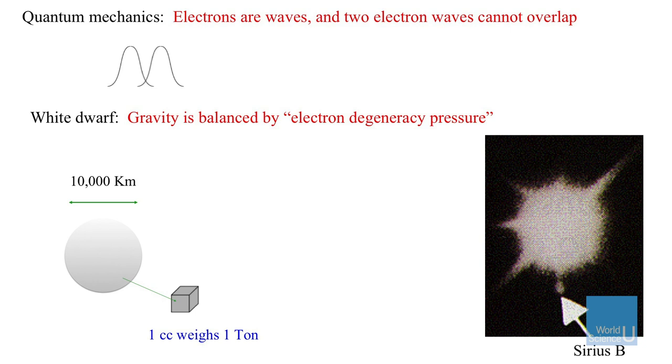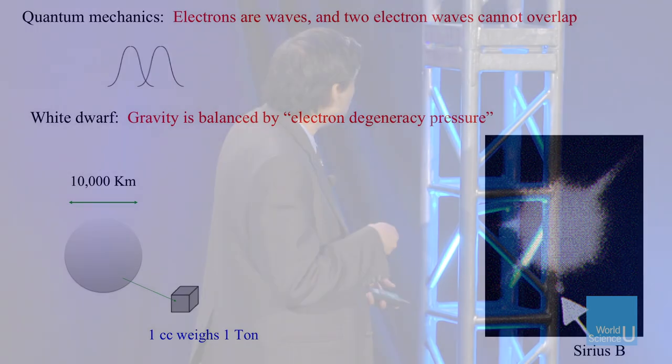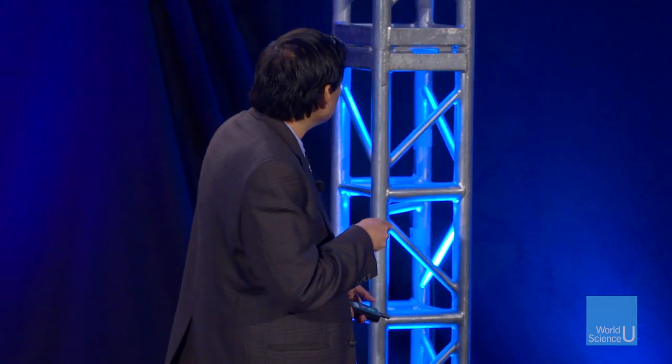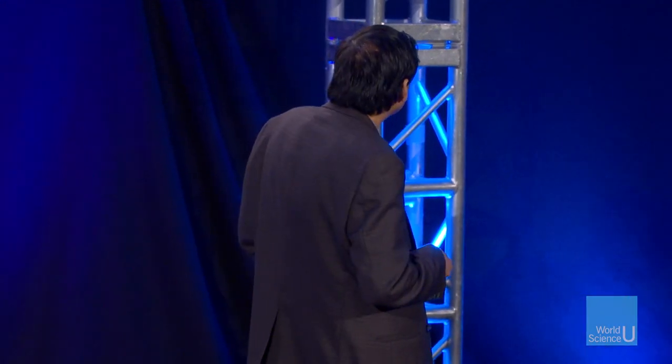The whole thing shrinks a lot, comes down to a size of about 10,000 kilometers, and one cubic centimeter — a sugar cube sized object of this — weighs about one ton. This is called a white dwarf, and there's a picture here. This is a star, and here is a little white dwarf called Sirius B — that's an example of something like this.